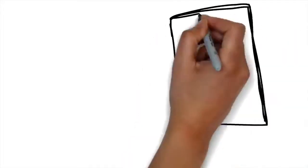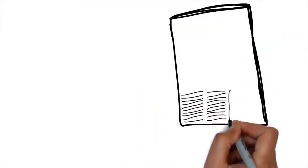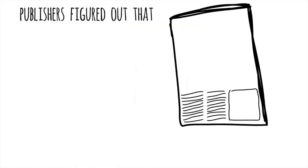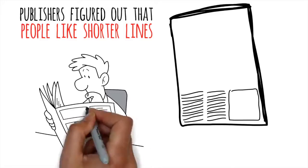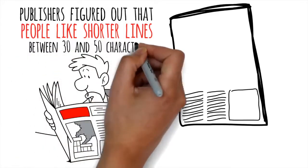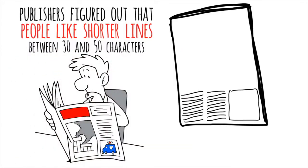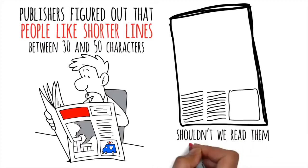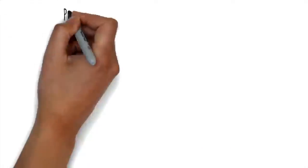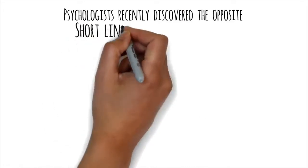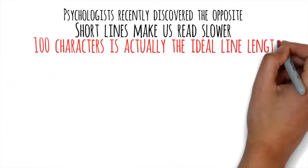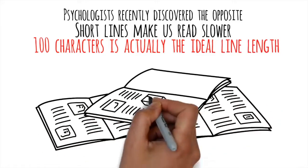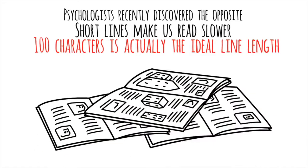Reading Faster. Have you ever wondered why newspapers use such thin columns? Years ago, publishers figured out that people like shorter lines. People were more likely to keep reading, so newspapers kept their lines between 30 and 50 characters. Since we like short lines better, shouldn't we read them faster too? Psychologists recently discovered the opposite. Short lines make us read slower. 100 characters is actually the ideal line length, even though it's double or triple what most newspapers and magazines use.